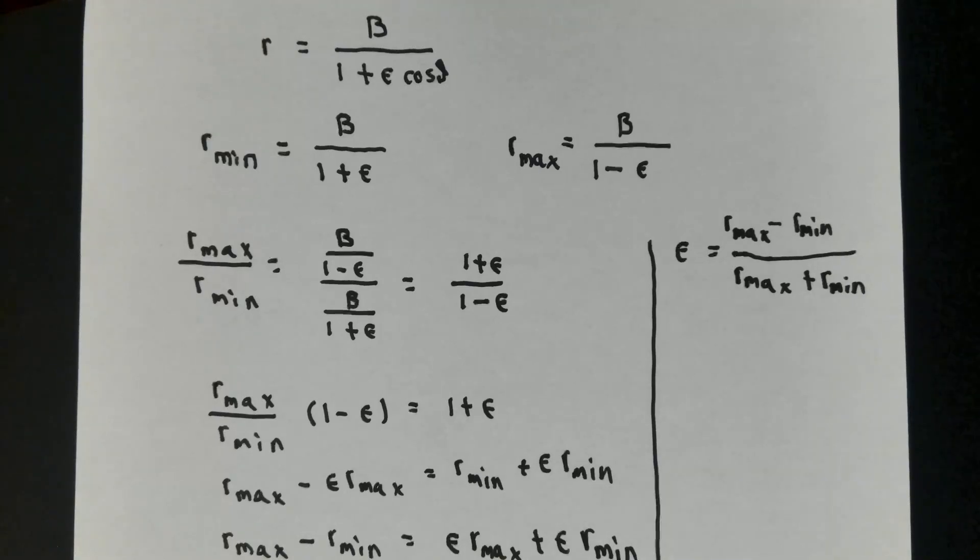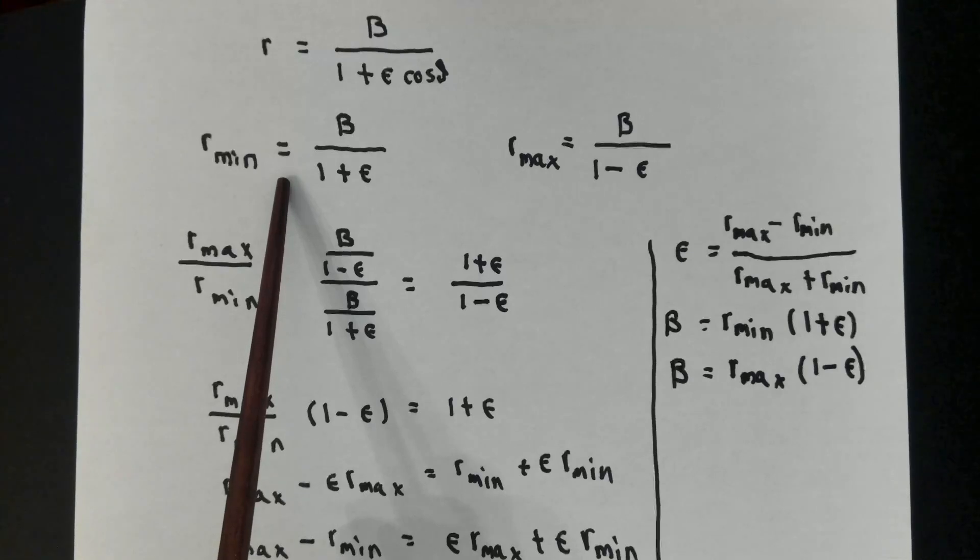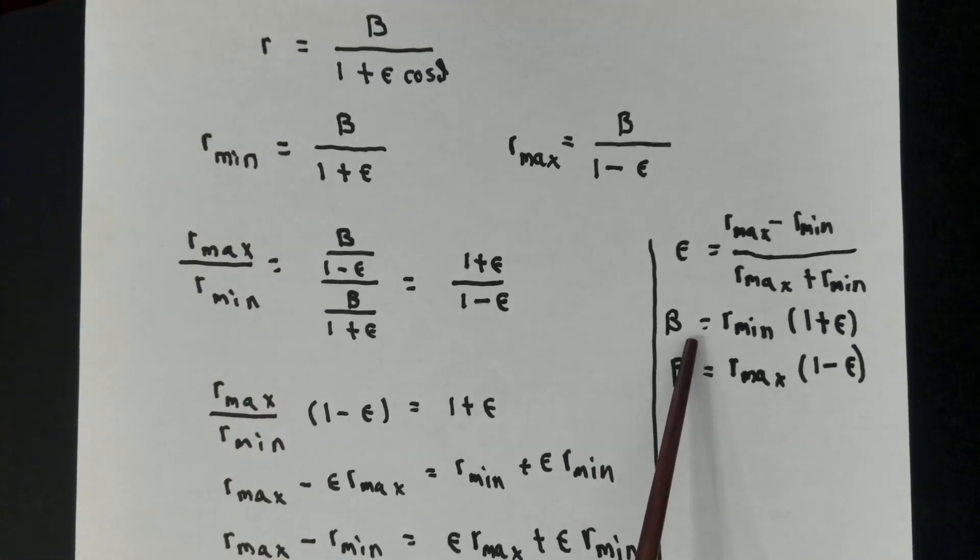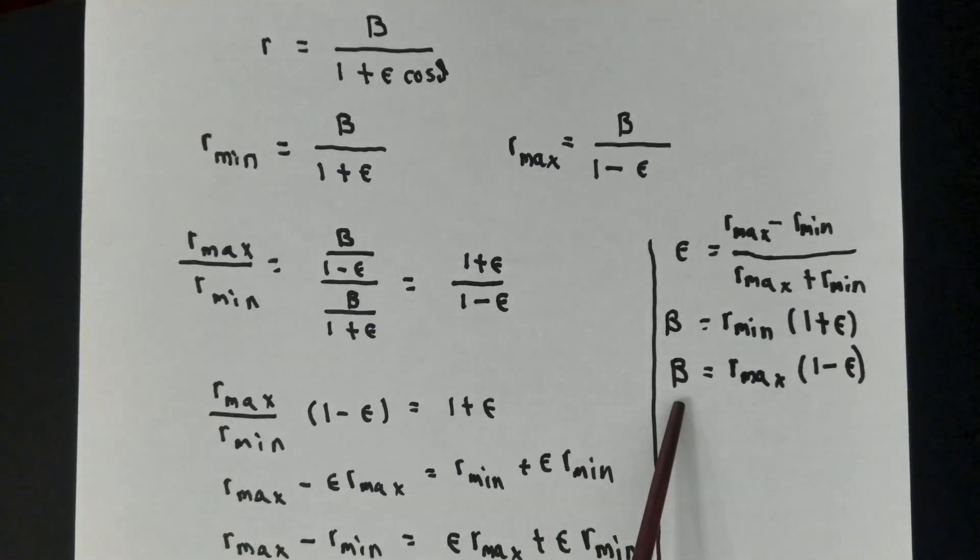If I tell you the biggest and smallest value of the r coordinate, then I automatically know the value of epsilon. On the other hand, returning to this formula, if I know r max and r min, I can calculate the epsilon, and this immediately tells me that b is r min times 1 plus the eccentricity. Likewise, b is r max times 1 minus the eccentricity. In what follows, I'm going to feel free to use these results as well.